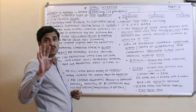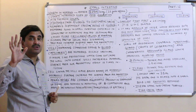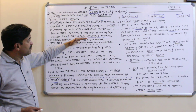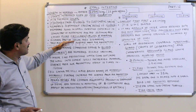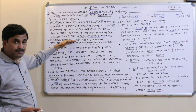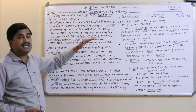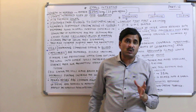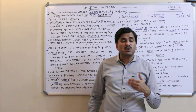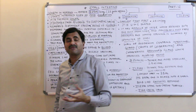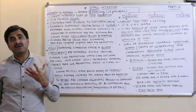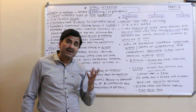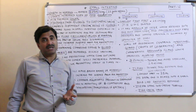Out of the three parts — duodenum, jejunum, and ileum — the plica circulares are found in the lower part of the duodenum and the jejunum but completely disappear in the lower part of the ileum. They increase the surface area for absorption. There are certain modifications in the small intestine that increase absorptive surface area: plica circulares, villi, and microvilli.